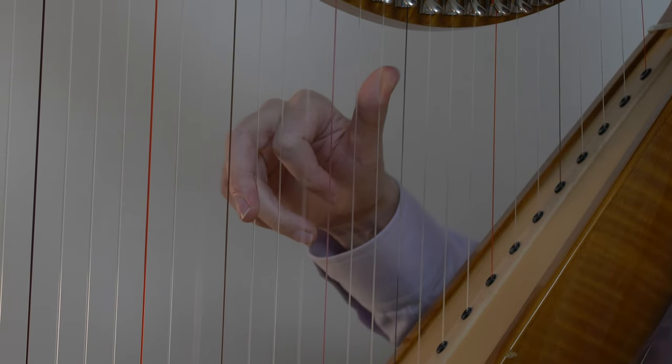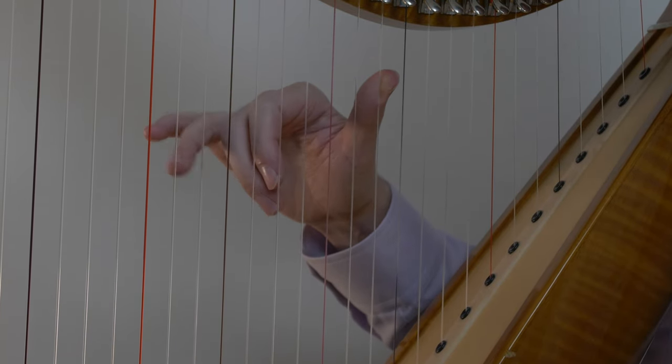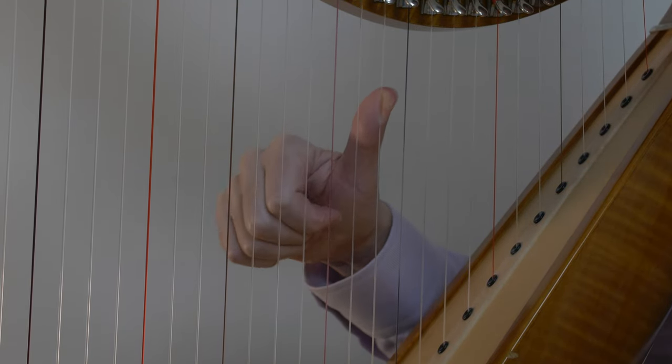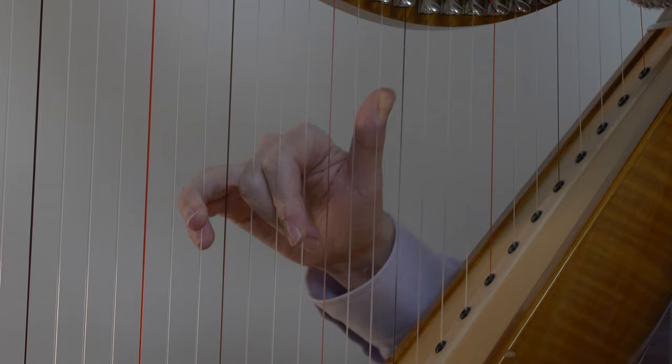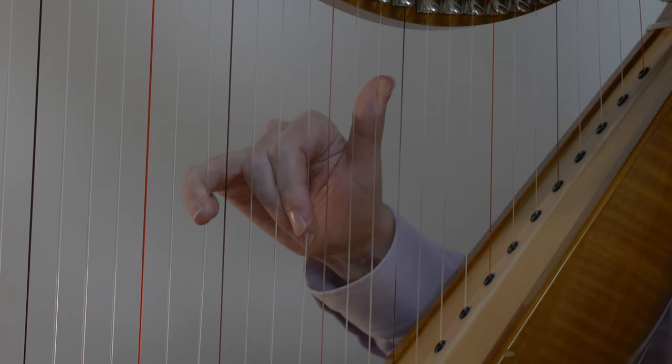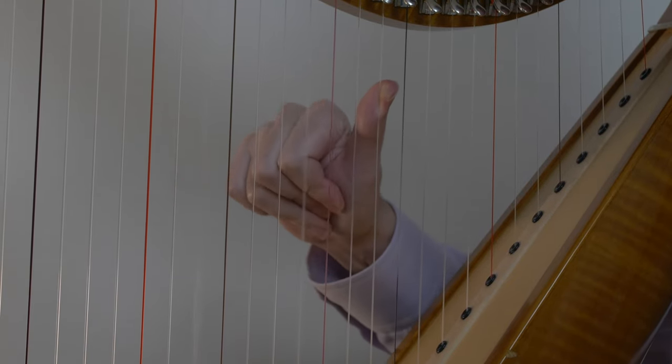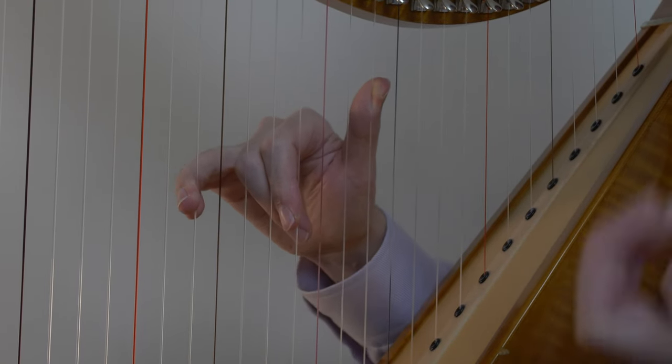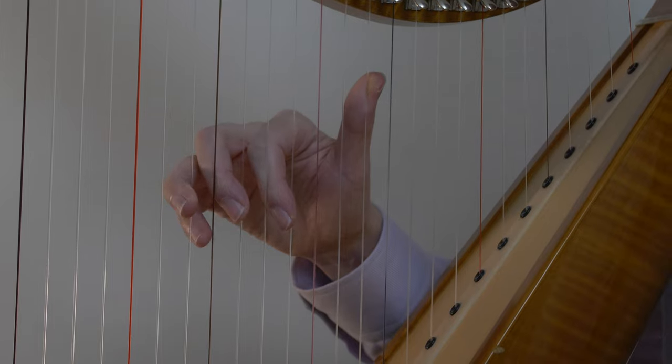Now another exercise we can do then is to try this: try keeping the thumb in this case on the E, placing four and two, but don't place the third finger and just practice the sound and feel of four and two getting played at exactly the same time.